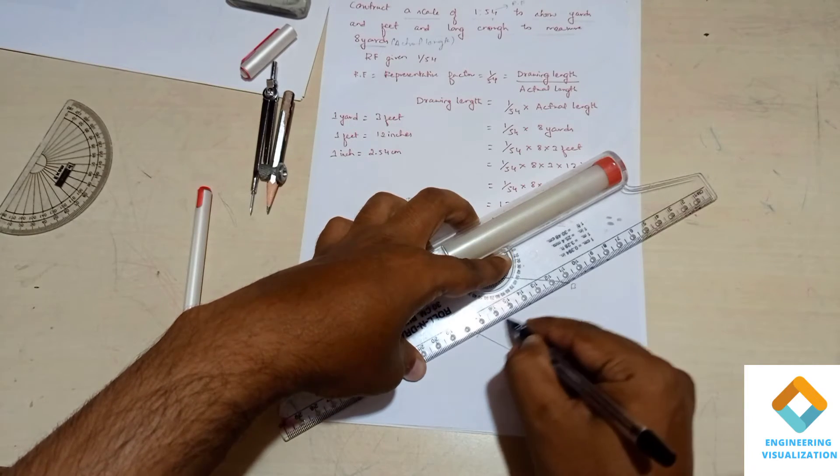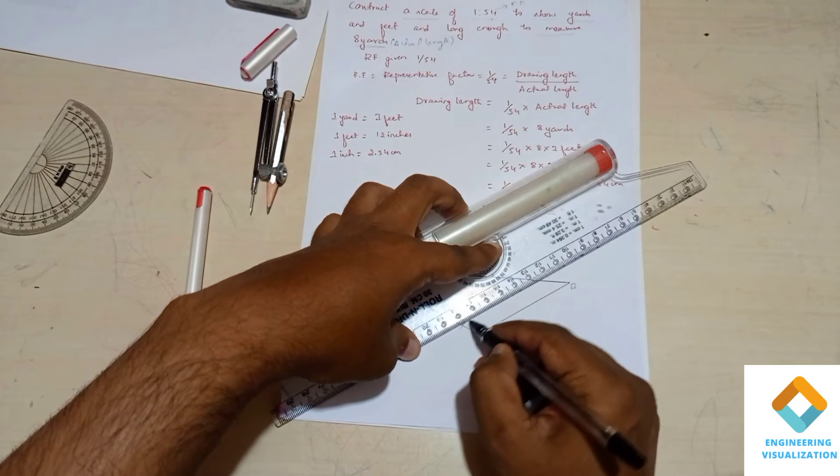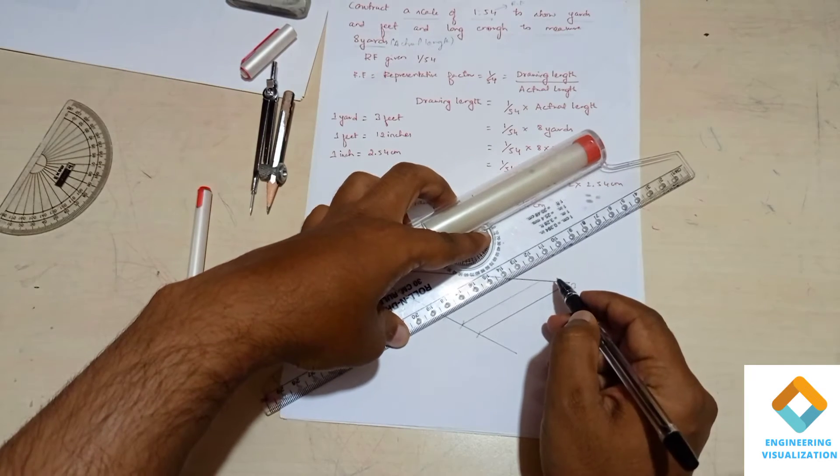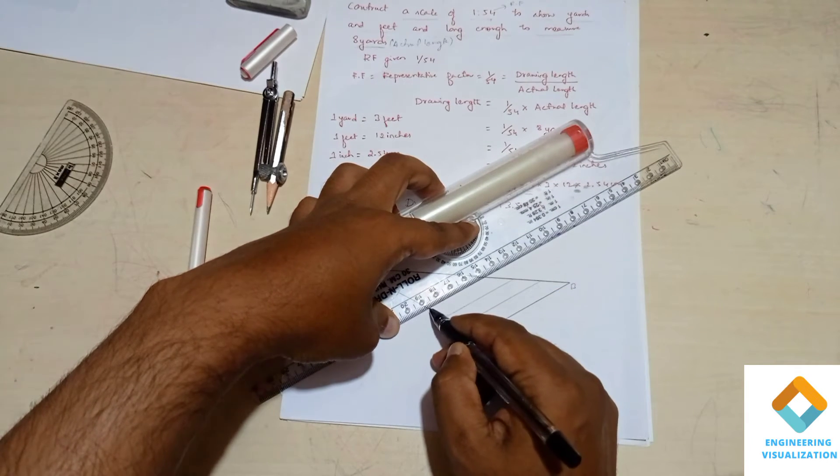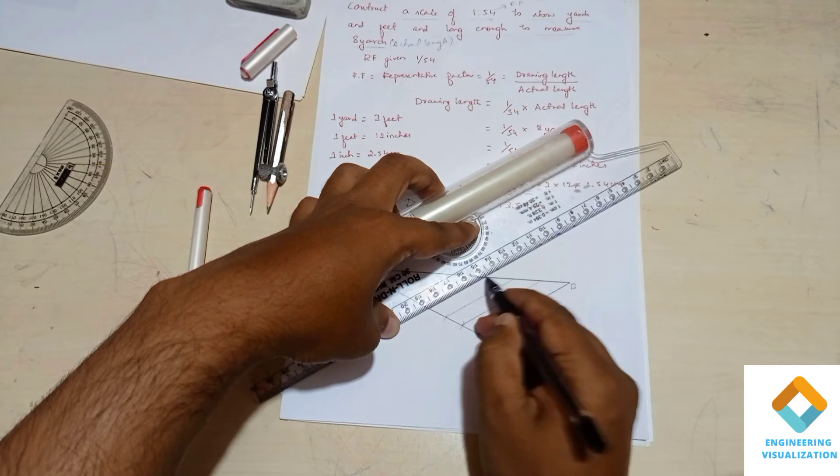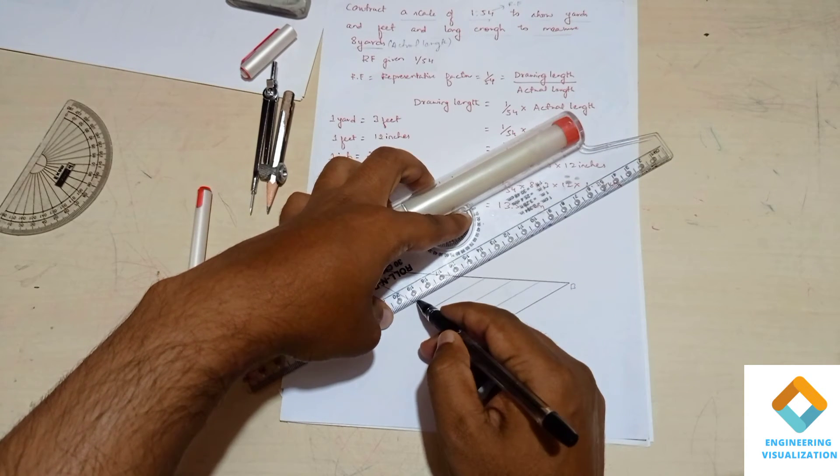Now using roller scale, you draw the parallel line, join all the arc points with the horizontal line. You can join using roller scale, draw the parallel lines.